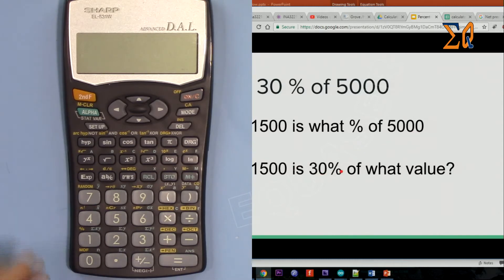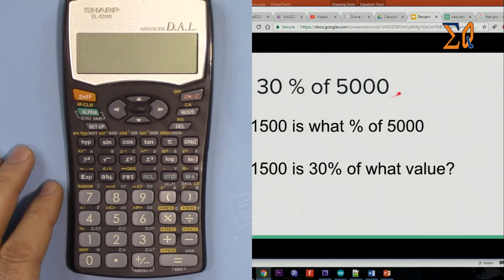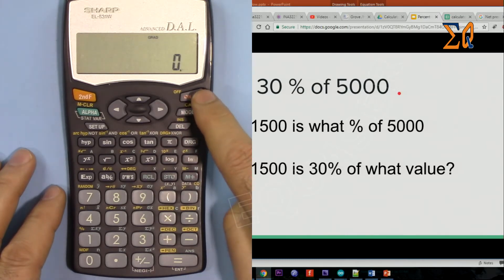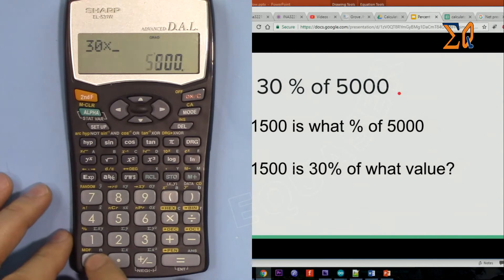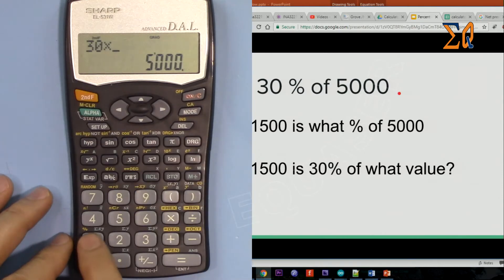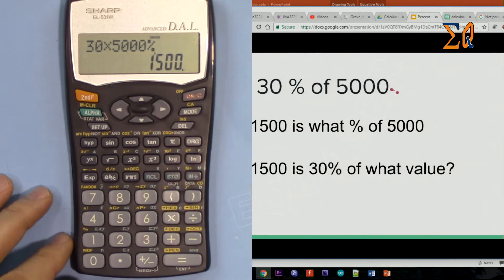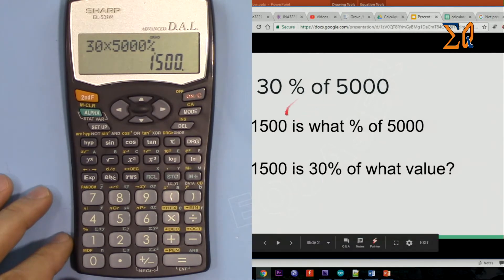So of the three ways, this is the most straightforward one. I'm just turning on the calculator - 30 times 5,000, and then second function and 1. That is 1500. So we have already all the answers, but let's see how we can answer the first one again.